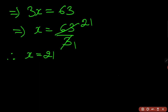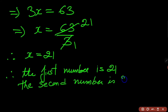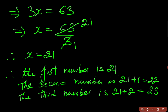Out of the 3 consecutive natural numbers, the first one is 21. The second number is 21 plus 1 which is 22, and the third number is 21 plus 2 which gives 23. So the 3 numbers are 21, 22, and 23. I hope you have understood number 10. Let us go to the next question, which is question number 11.